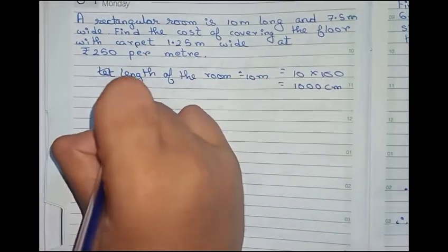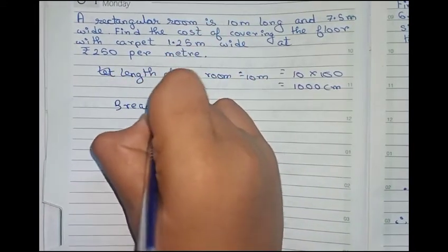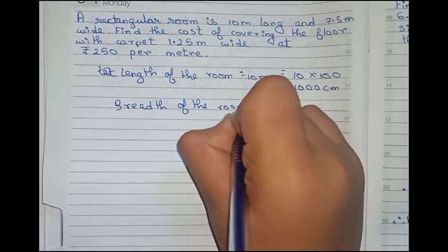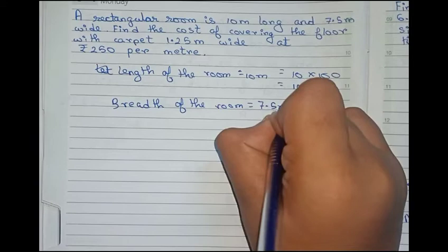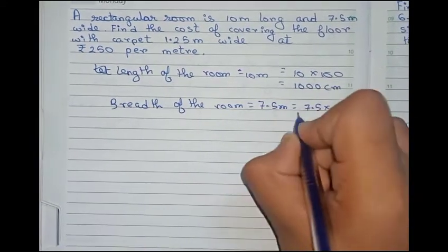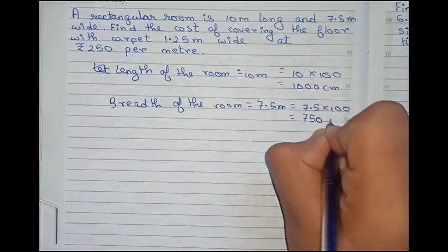Now similarly do with breadth. Breadth of the room, it is equal to 7.5 meter. Convert it into centimeter. 7.5 into 100. That is equal to 750 centimeter.